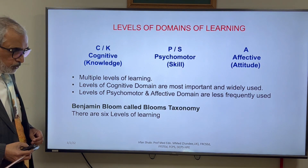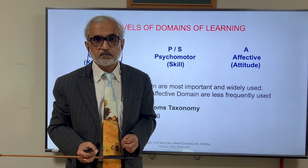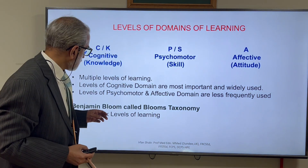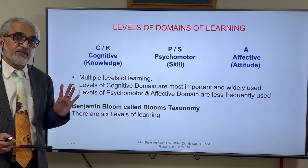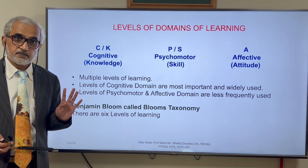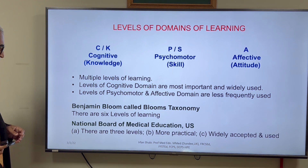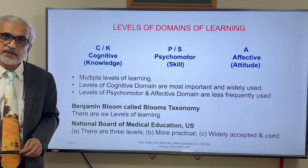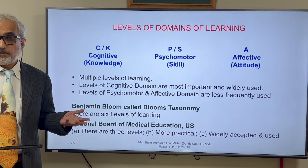There are two very important classifications which describe these levels. One is Benjamin Bloom's — called Bloom's taxonomy — which has six levels of learning. It is very famous. The other is the National Board of Medical Education in the United States, which has three levels of learning addressing the cognitive domain primarily.